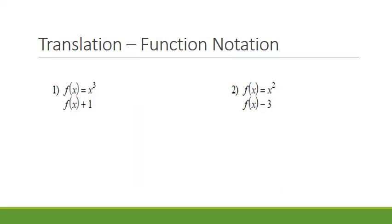For function notation, it's a little different. We have our parent function f of x — for this example it's x to the third, but that's not actually important for these types of problems. We're told f of x plus 1. Since f of x is the same thing as y, this means y plus 1, so this is going to be an upward shift of 1 unit. For example 2, the parent function is x squared. We took f of x and said minus 3, which means we went down 3 units.